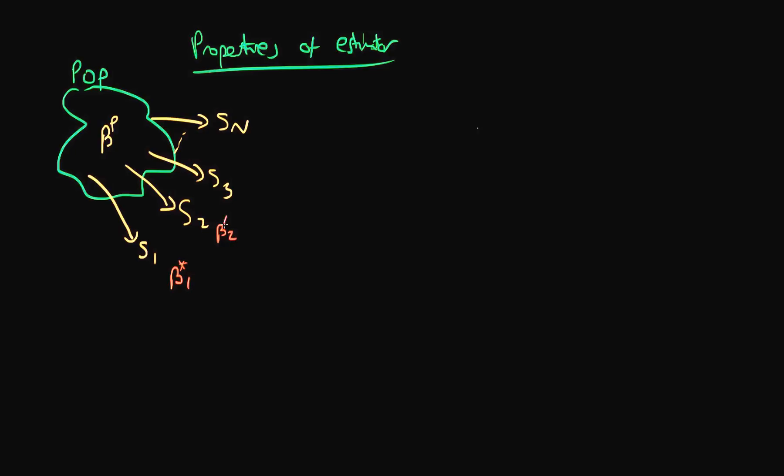So this is just a value. In the first sample we use our estimator and it comes out with beta 1 star, in the second one beta 2 star, third one beta 3 star, etc., all the way up to beta n star.